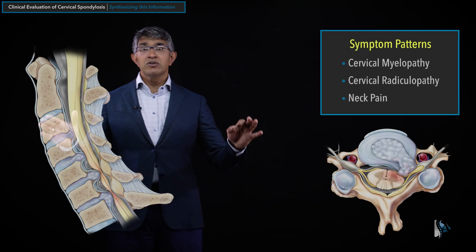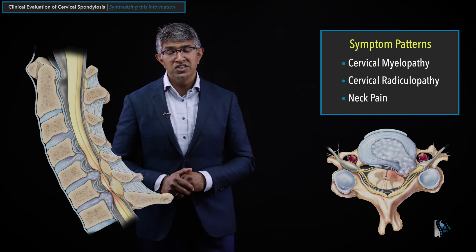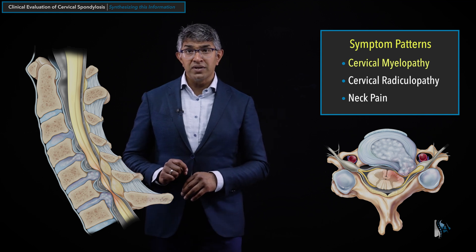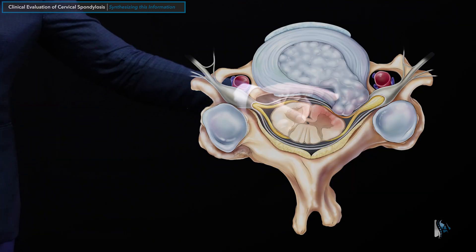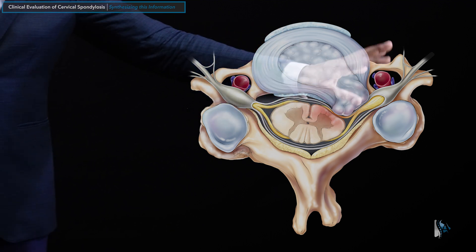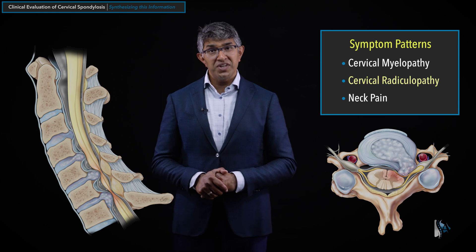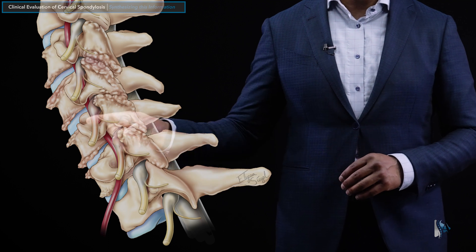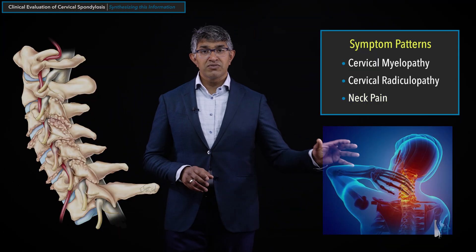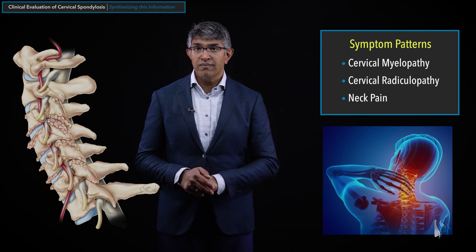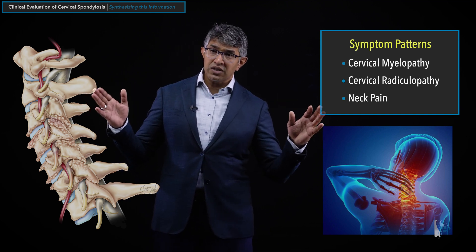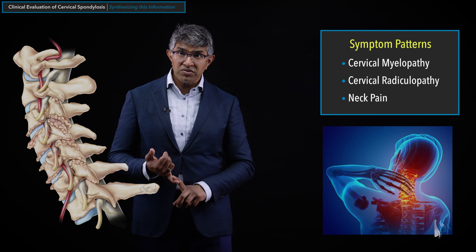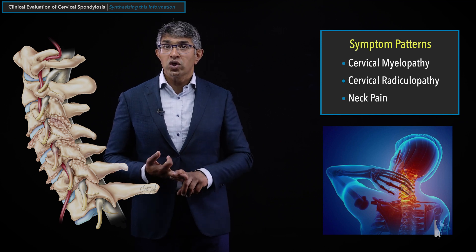Cervical spondylosis involves age-related degeneration. In this picture, you can see the spinal cord is under pressure — this patient may have cervical myelopathy. Cervical radiculopathy occurs when a disc herniation causes pressure on a nerve, producing that symptom pattern. Neck pain may come from arthritis in the neck, disc degeneration, osteophytes, or muscular causes. Those are the symptom patterns we see with cervical spondylosis, and we think about them in a structured way when getting history, performing physical examination, and reviewing imaging.